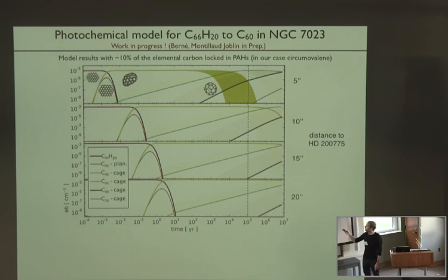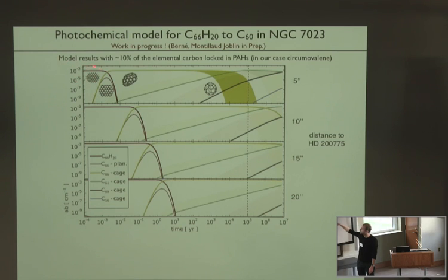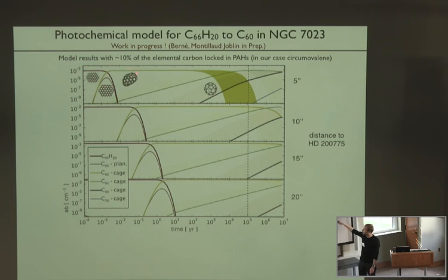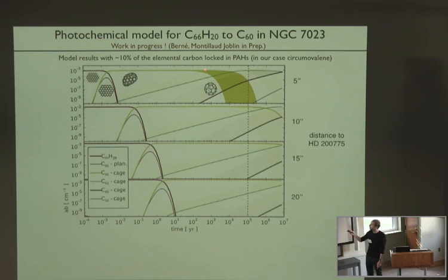Focusing on the upper panel—the position closest to the star: you start with your circumovalene molecule, and very quickly in this harsh environment you completely dehydrogenate it and form this fully dehydrogenated PAH. Then very quickly this molecule folds and forms a closed cage, which can survive for a relatively long time—about a few thousand years. Eventually you start losing C2 units and cascade down until you reach the C60 state.